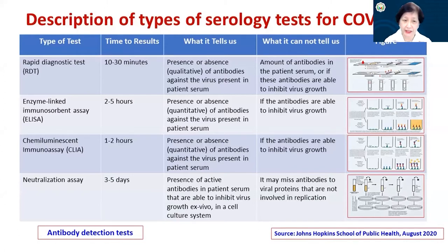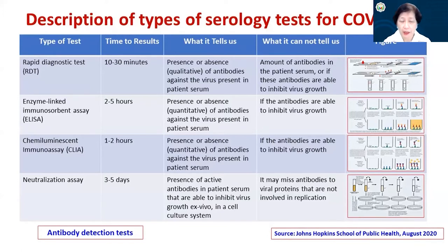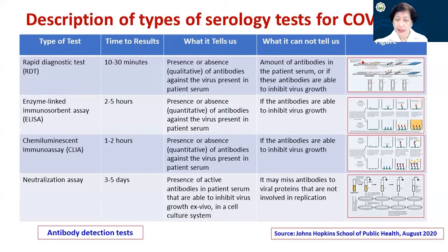We also have to consider neutralization assays, especially when doing vaccine trials — we want to see that vaccine recipients develop antibodies able to neutralize the virus. This is not for everyday or point-of-care use, but for research purposes. It takes about three to five days, and you look at the presence of active antibodies in patient serum that are able to inhibit virus growth ex vivo in a cell culture system. However, it may miss antibodies to viral proteins not involved in replication.